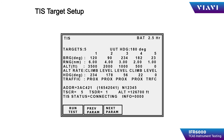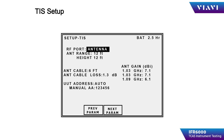The IFR 6000 can simulate up to five different targets by simply filling in the bearing, range, altitude, and altitude rate — whether it's climb, descend, or level flight. Setup for the traffic information system is similar to any of the other modes inside the IFR 6000. Pressing run test on the IFR 6000 will engage the scenario as set up by the operator, and the configured target should be displayed on the traffic information system display.